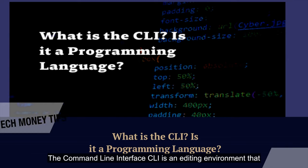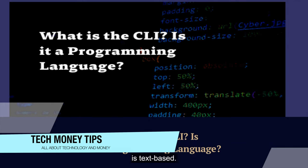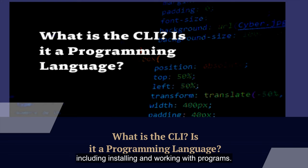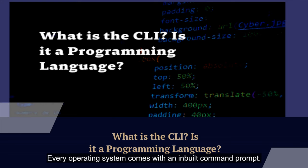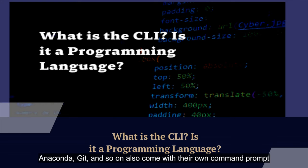The command line interface (CLI) is an editing environment that is text-based. It uses specified text known as commands to interact with the computer and perform numerous operations, including installing and working with programs. Every operating system comes with a built-in command prompt. Some application packages such as Node.js, Anaconda, Git, and others also come with their own command prompt.